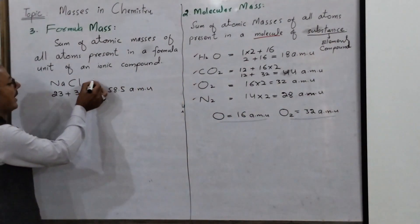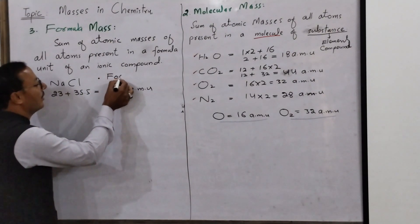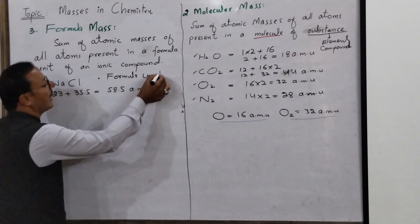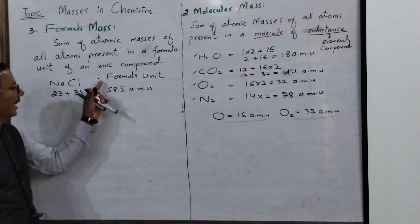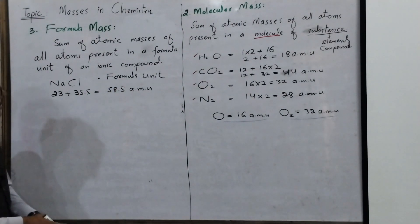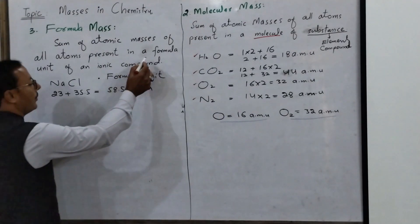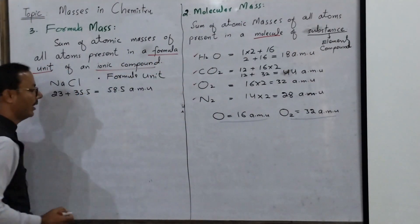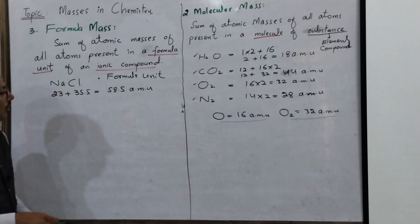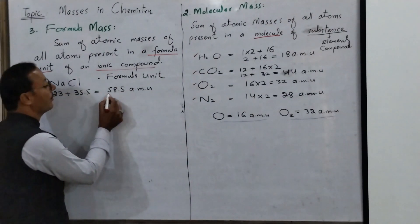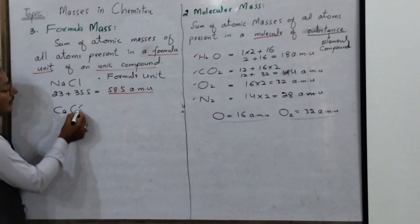We say it is a formula unit. NaCl — it is a formula unit. So: an atom is for elements; a molecule is for covalent compounds; and a formula unit is for ionic compounds. The sum of atomic masses of all atoms present in a formula unit of an ionic compound — when you sum those masses — the resulting mass is called formula mass.